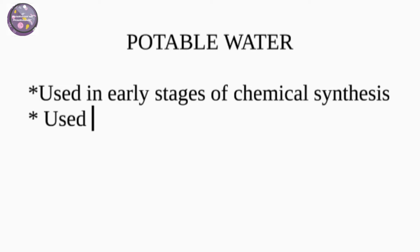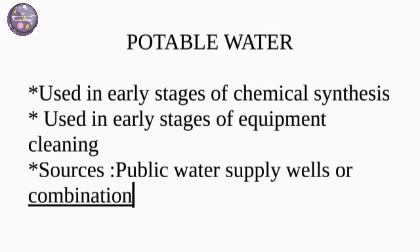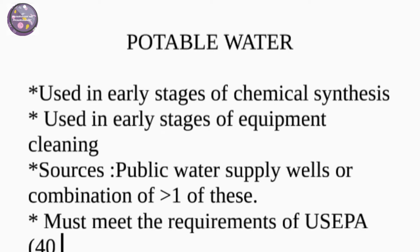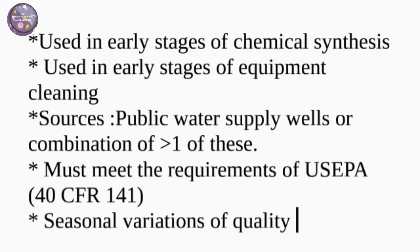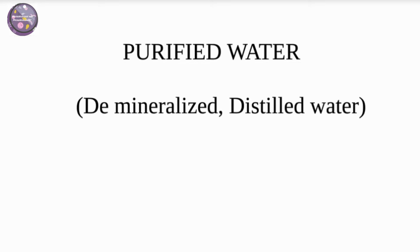Potable water is used in the early stages of chemical synthesis and in early stages of equipment cleaning. Its sources may be public water supply, wells, or a combination of more than one of these. It must meet the requirements of US EPA 40 CFR 141. Seasonal variations in quality may occur and must be considered for treatment before usage.